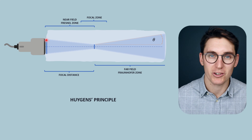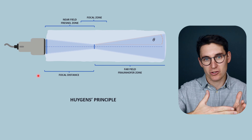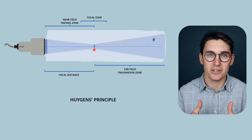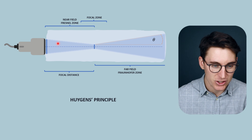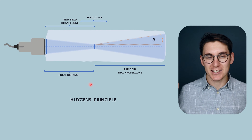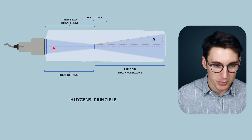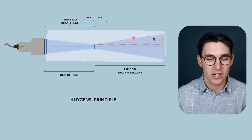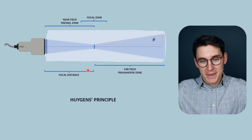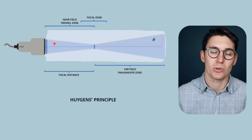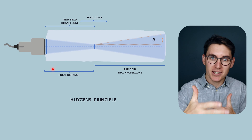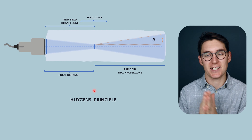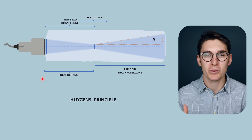The width of our ultrasound beam at the transducer should equal the width of our single element transducer, and this diameter should be double that of the diameter at the end of the near-field zone at the focal point. When looking at beam shape, we are interested in the distance between the transducer and the focal point, as well as the amount of divergence after that near-field distance. There are two factors that change both: the diameter of our ultrasound probe and the frequency of the wave.